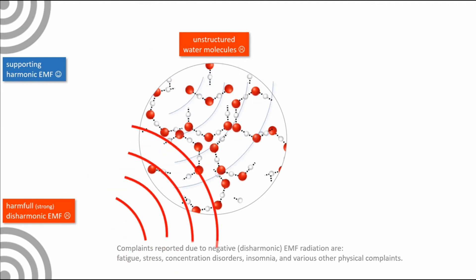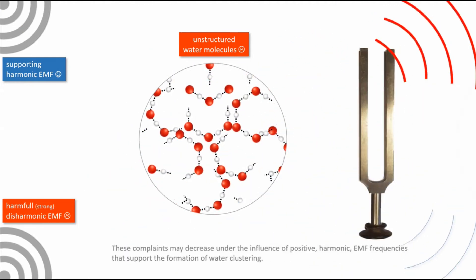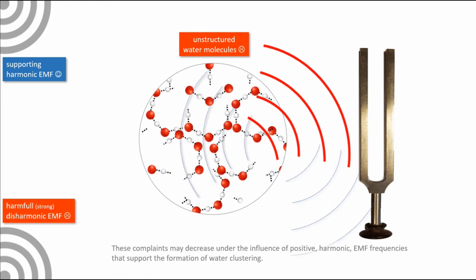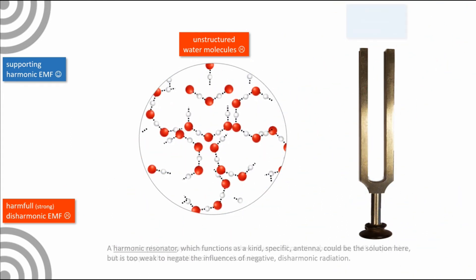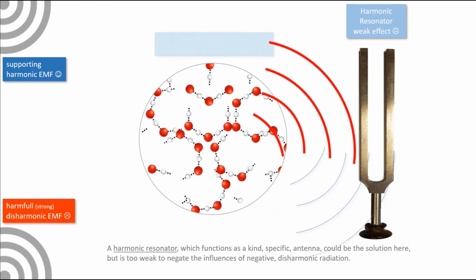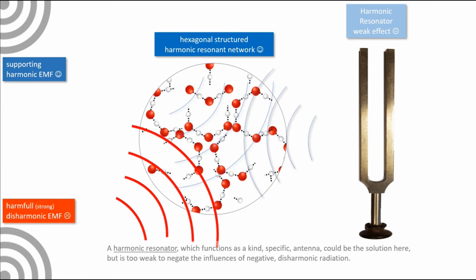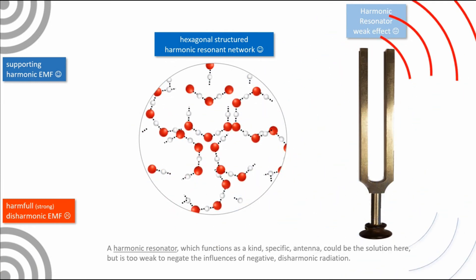These complaints may decrease under the influence of positive harmonic EMF frequencies that support the formation of water clustering. A harmonic resonator which functions as a kind of specific antenna could be the solution here, but is too weak to negate the influences of negative disharmonic radiation.